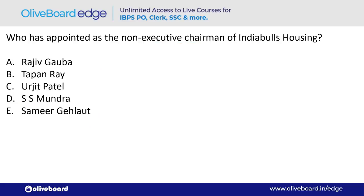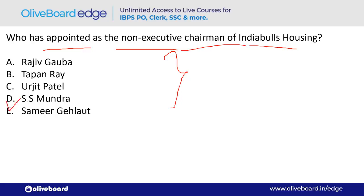Who has been appointed as the Non-Executive Chairman of India Bulls Housing? The answer is S.S. Mundra — option D. S.S. Mundra is a former Deputy Governor of RBI.